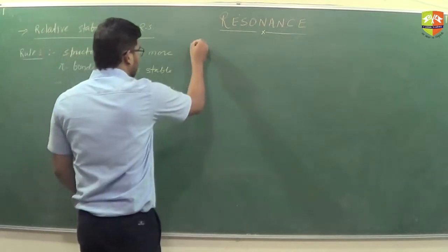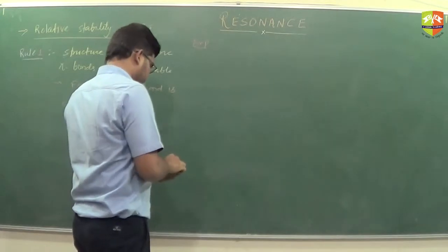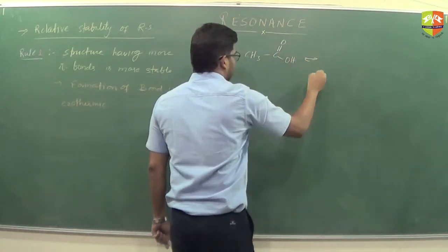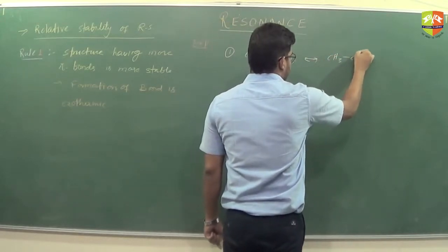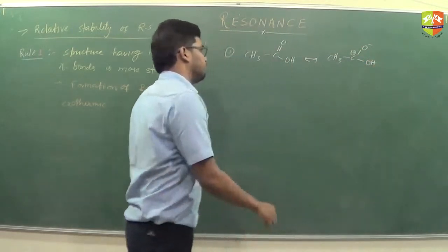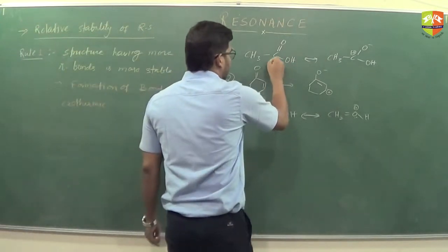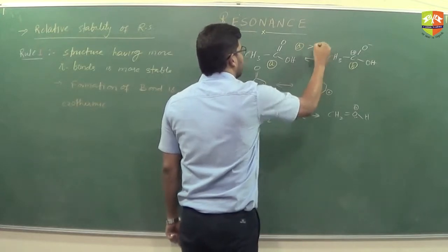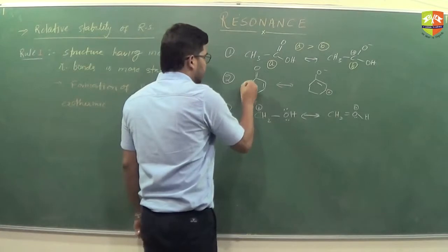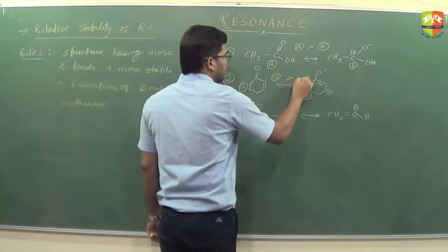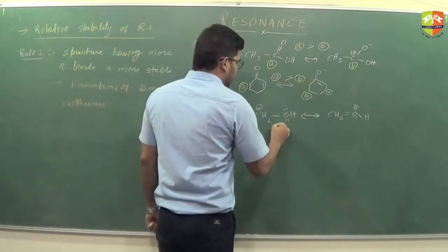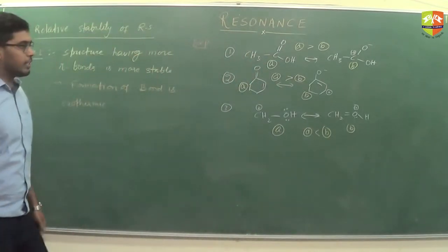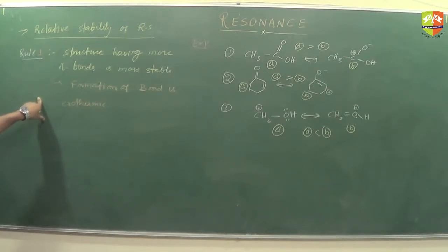Looking at some examples: this is structure A and this is structure B. If you calculate the number of pi bonds, the number of pi bonds is more in A, so the stability of A is more than that of B. Number of pi bonds in A is 2 but in B it is 1. So the stability of A is more than B. We just count the number of pi bonds and check the stability accordingly.